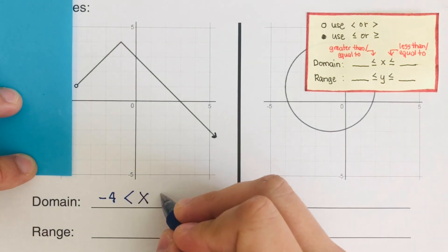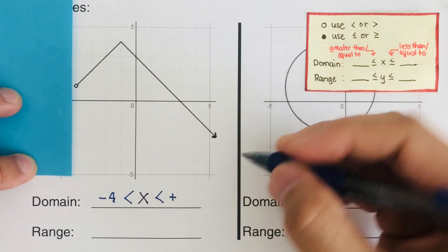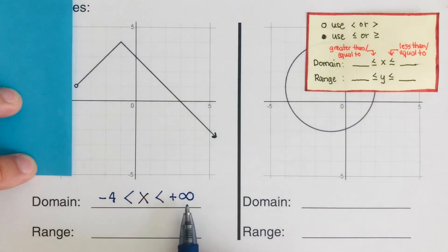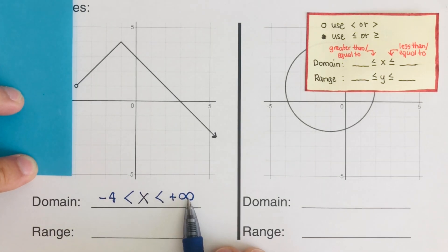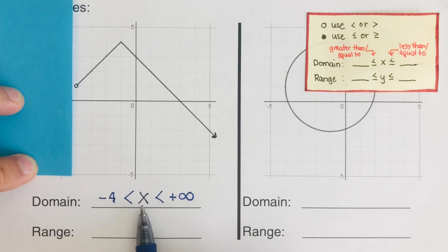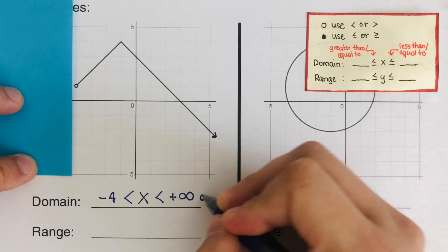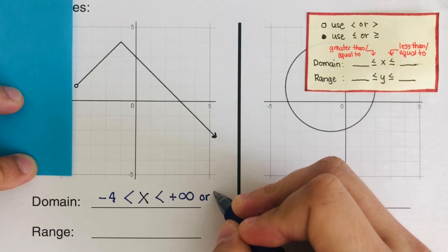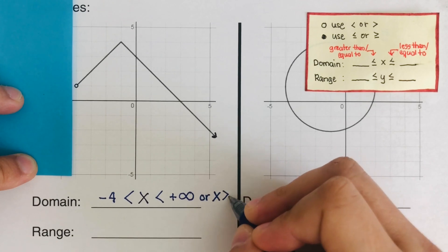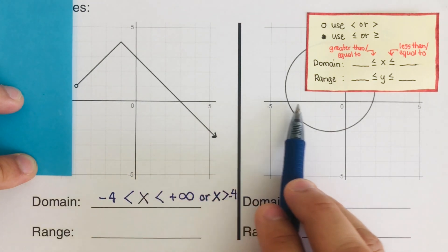And then it's going to be less than positive infinity. Infinity means it goes forever — it does not end. It's like a sideways number eight. So that would be: x is greater than negative four, all the way to positive infinity. Or we can rewrite this as simply: x is greater than negative four, meaning any value greater than negative four is our domain.